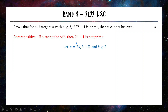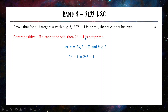If n cannot be odd, let's define 'not odd' as an even number. So n equals 2k where k is an integer and k is greater than or equal to 2. That's important — the question says n is bigger than or equal to 3, and if n is even it has to be 4 or above, so k must be greater than or equal to 2. Now we're looking at 2^(n-1): substituting n = 2k, we get 2^(2k-1). The goal is to show this is not a prime number. We can rewrite 2^(2k) as (2^k) squared, making it a difference of two squares.